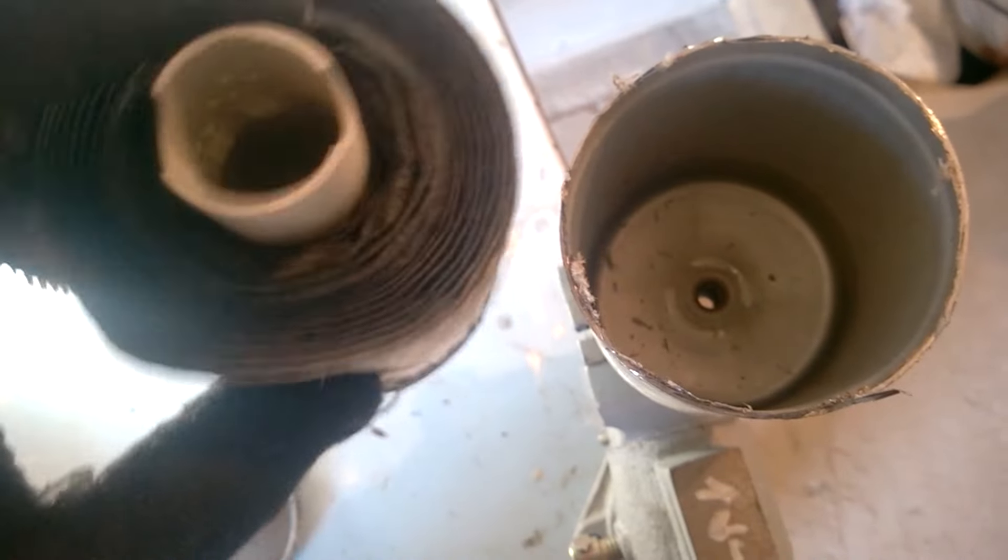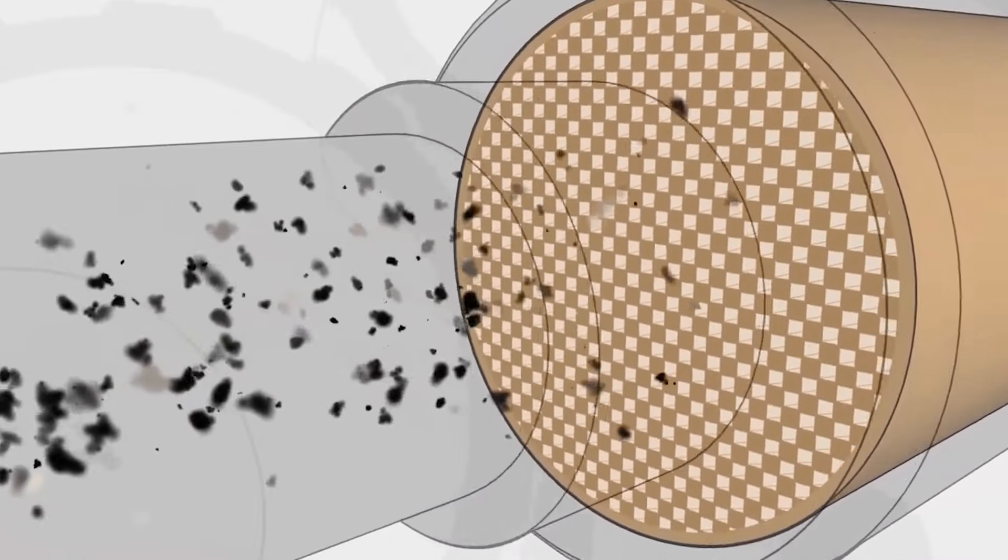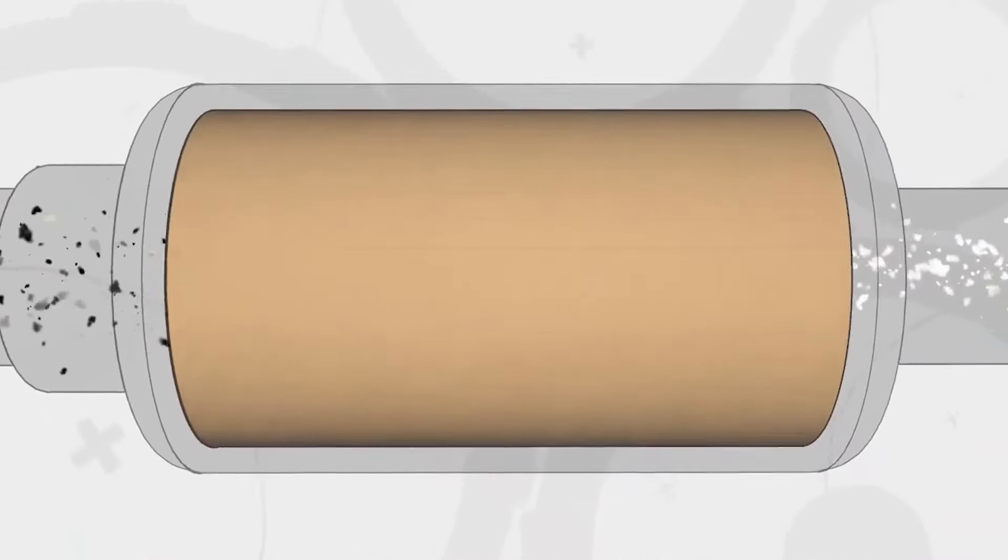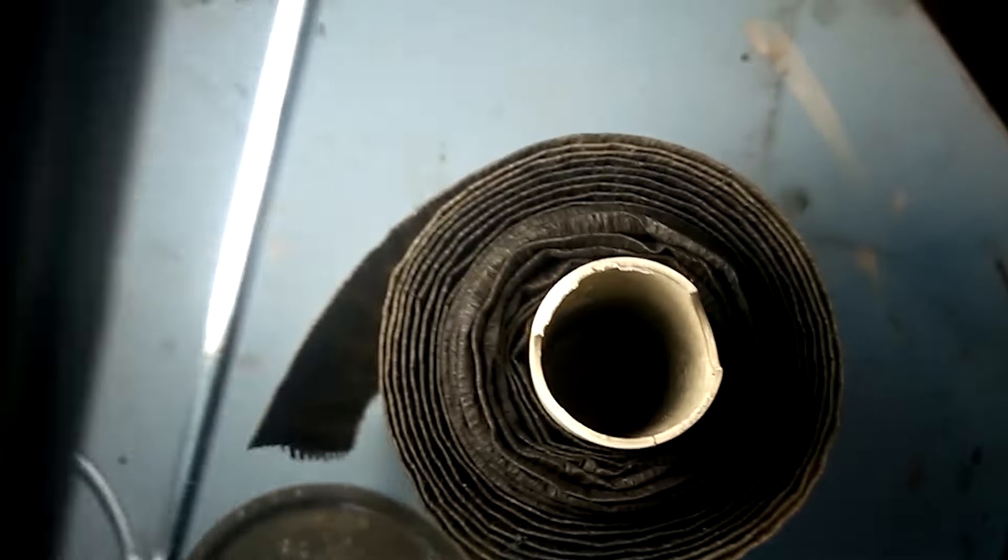As I understand it, when fuel enters the filter, it first goes into the plastic tube, and then starts to fill the entire space around the filtering element. Then the fuel saturates the paper, thereby trapping any dirt particles if present.